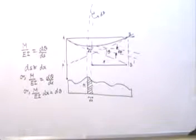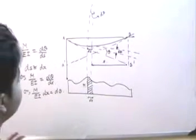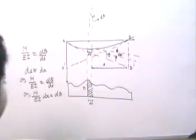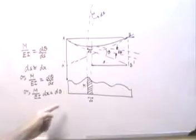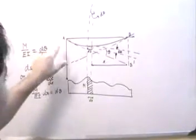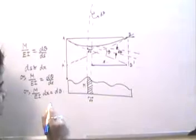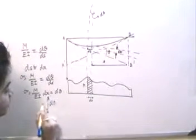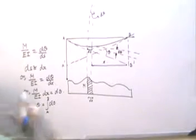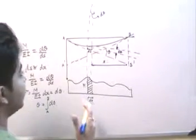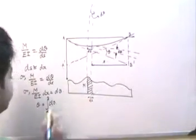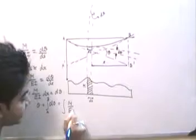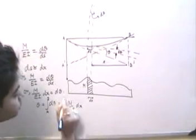If we find the difference of angle between the tangents of any two points, say A and B, then essentially what we have to do is integrate dθ from the first point to the last point. So essentially dθ integrated from A to B will give the value of θ — that is, the difference of angle between the tangents of A and B. This is equal to M/EI times dx from A to B.